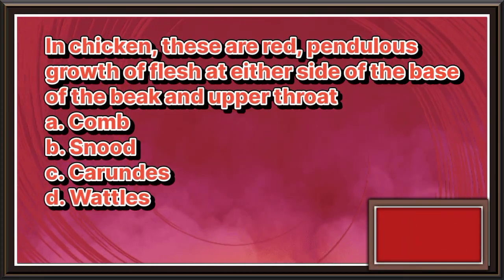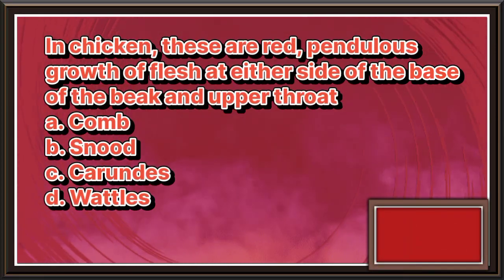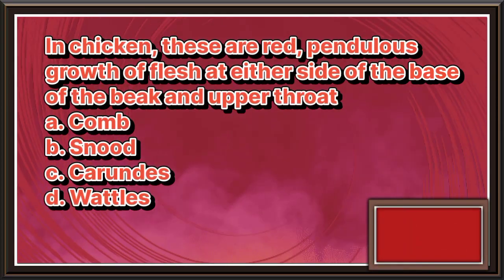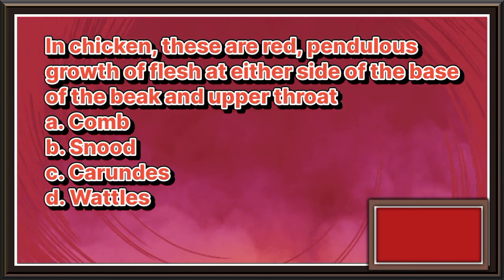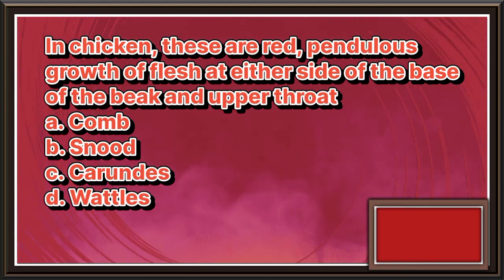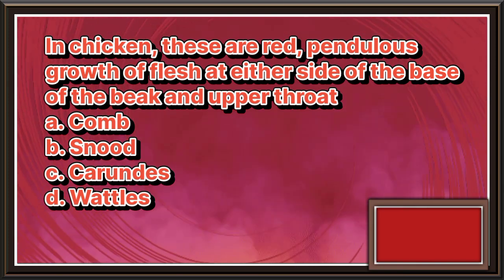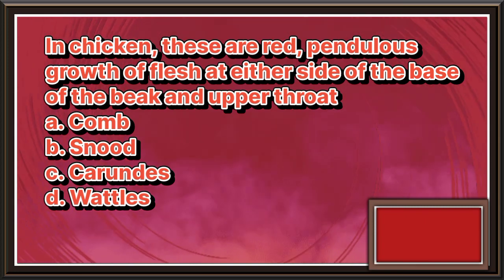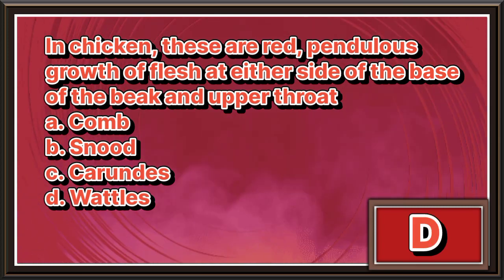In chicken, these are red pendulous growth of flesh at either side of the base of the beak and upper throat. A. Comb. B. Snood. C. Carens. D. Wattles. The answer is letter D.